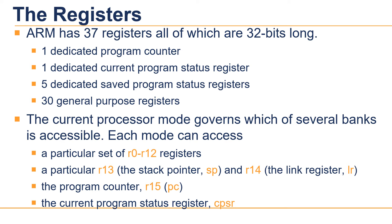There is one dedicated program counter, one dedicated current program status register, five dedicated saved program status registers, and 30 general purpose registers.